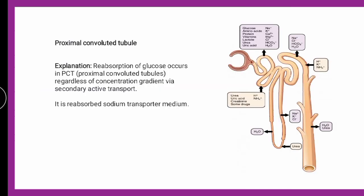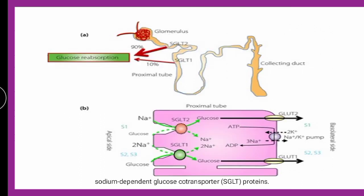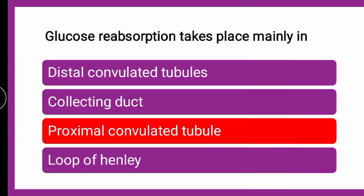Glucose reabsorption generally occurs in the PCT, that is the proximal convoluted tubule. Various ions, glucose, vitamins, etc. are all reabsorbed from the PCT regardless of the concentration gradient via secondary active transport. The active transporters involved are sodium-dependent glucose transporters SGLT1 and SGLT2, with 2 sodium and 1 glucose. So the correct answer is PCT — proximal convoluted tubule.